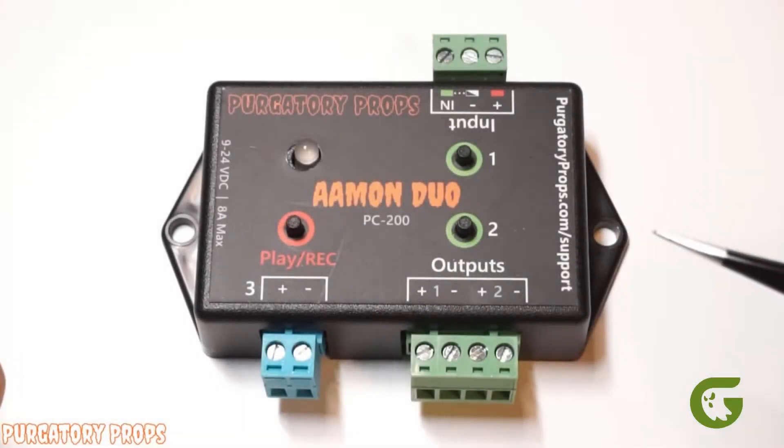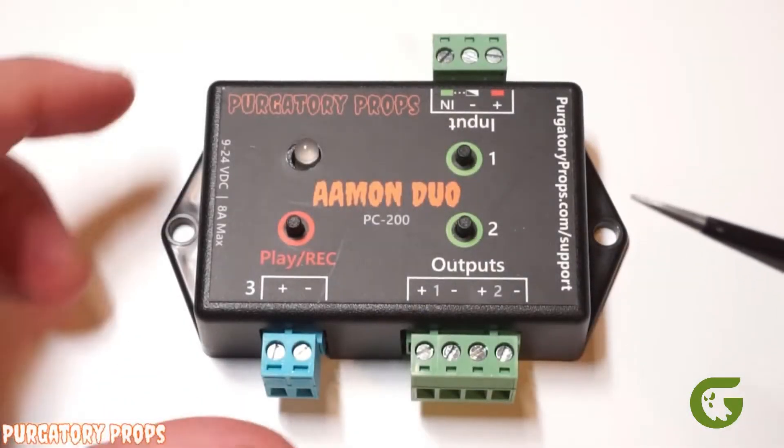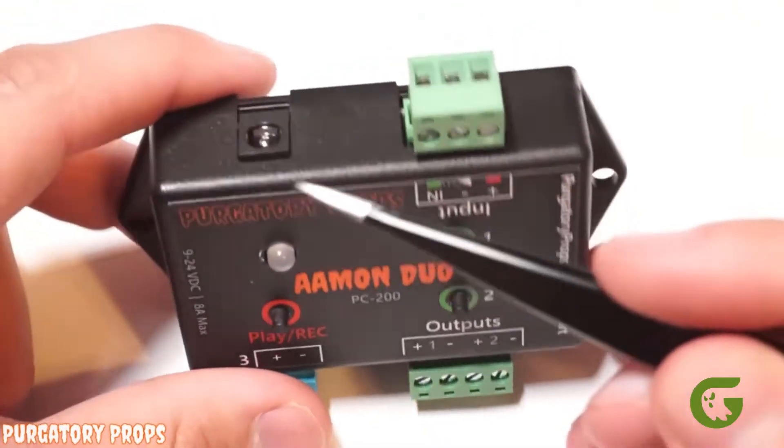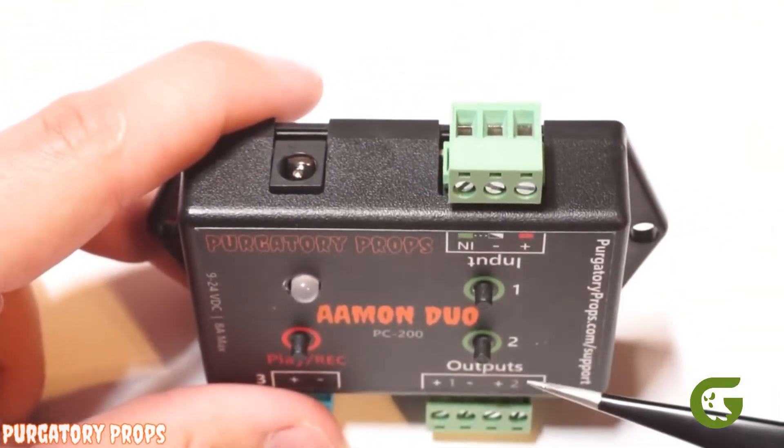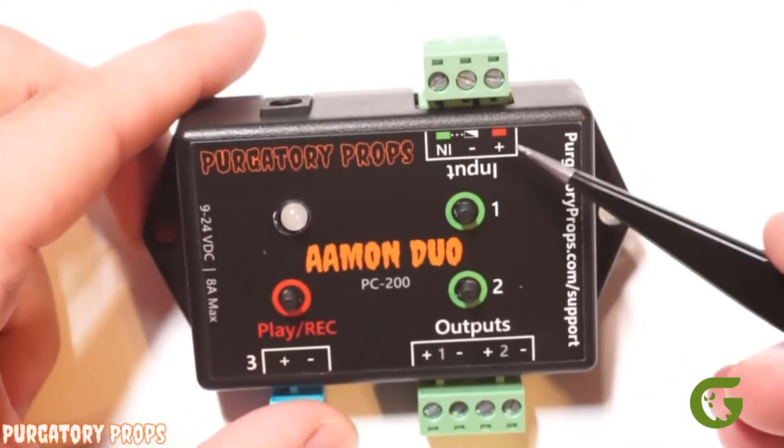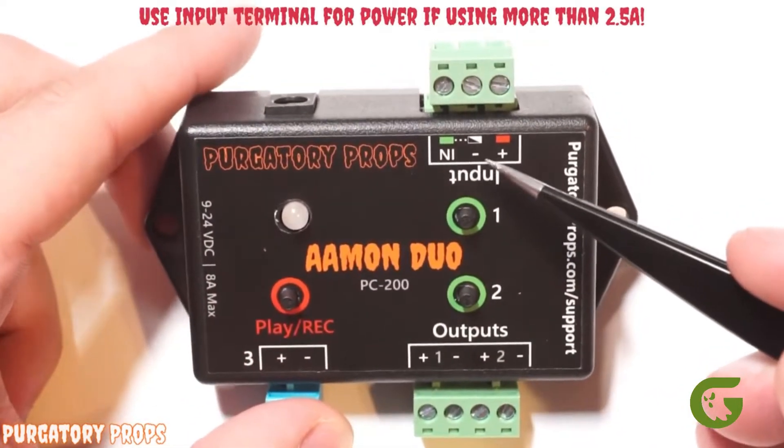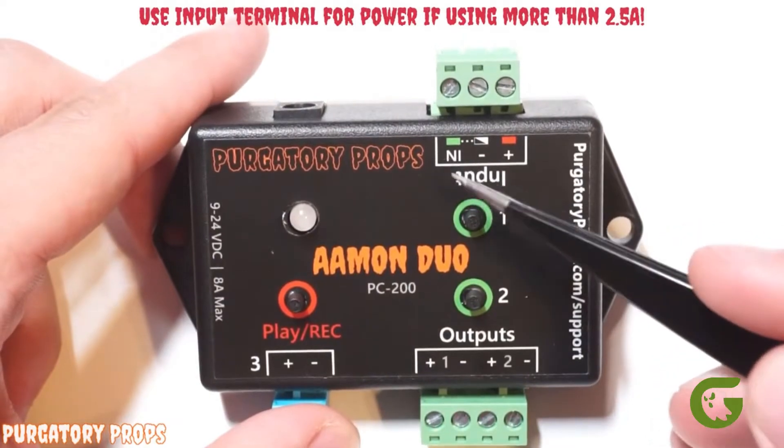Today we're going to show you how to hook up and use your Amon Duo. The Amon Duo is very simple to use. On this side we have a DC jack for power and then your input screw terminals. Those have a positive and negative which can also be used for power and then an input.